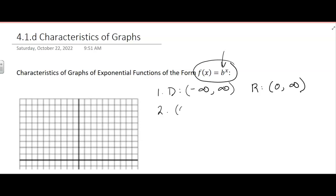These functions go through the point (0,1), because b is some constant and it's not zero and it's not one. You raise it to the zero power, it's just going to equal one. So whatever your base is to the zero power, that's going to equal one. This is the y-intercept. So we know that is a point on these graphs. There is no x-intercept because it does not cross the x-axis.